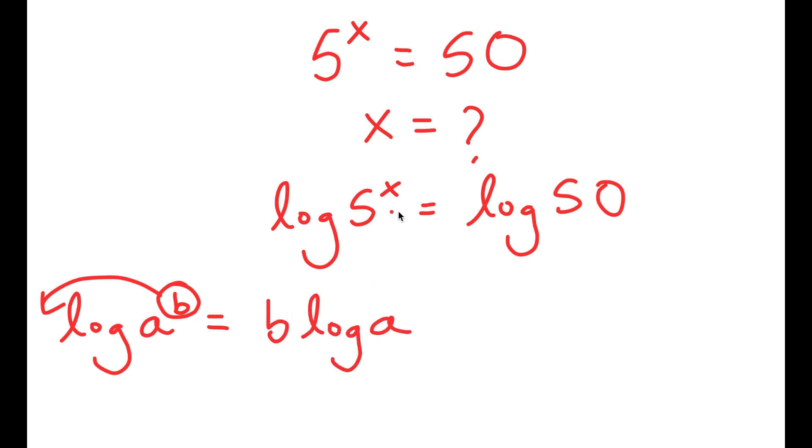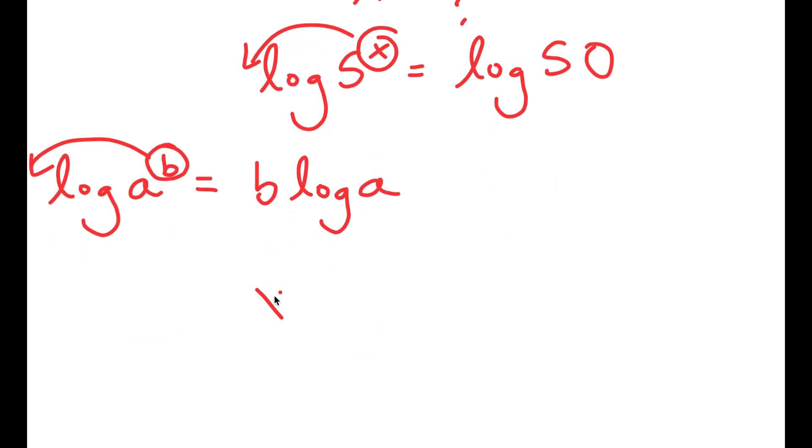In this case, I have log 5 to the power of x, so I can move x to the front. So I get x times log 5 is equal to log 50.